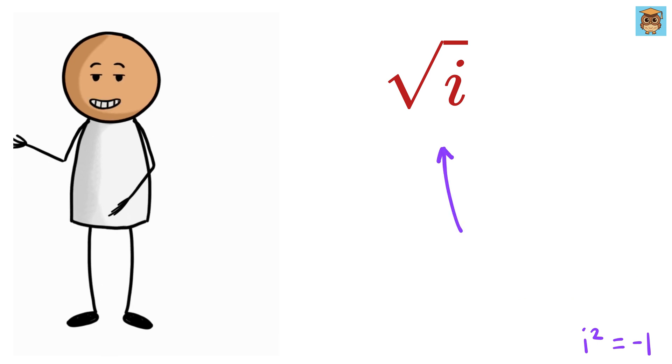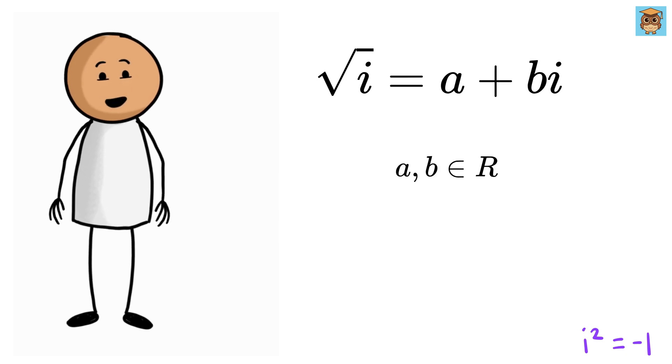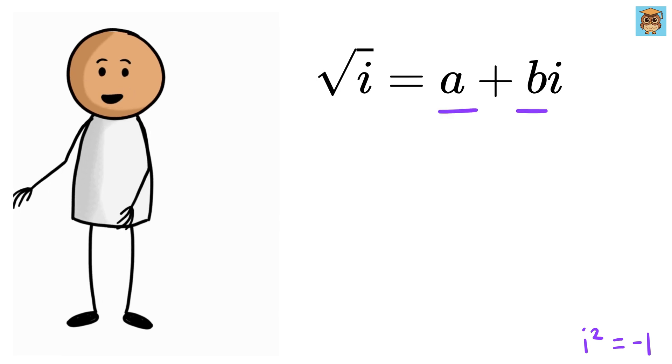Now, to find the square root of i, let's assume it can be written in the general form a + bi, where a and b are real numbers. Our job is to find the values of a and b that satisfy this equation.